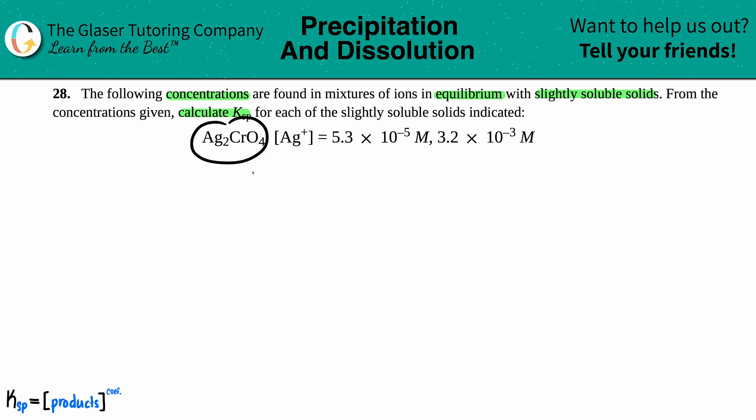In this case, we have silver chromate, Ag₂CrO₄, and they tell us that the concentrations of the silver was 5.3 times 10 to the negative fifth molarity. And I'm assuming that this is the CrO₄ concentration, so I'm just going to add that in.